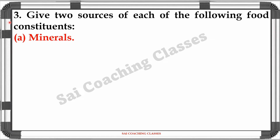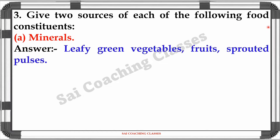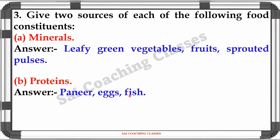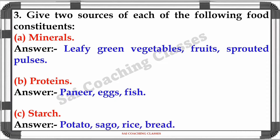Question 3. Give two sources of each of the following food constituents. A. Minerals. Answer: Leafy green vegetables, fruits, sprouted pulses. Protein: paneer, eggs, fish. Starch: potato, sago, rice, bread.